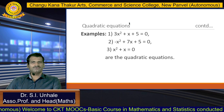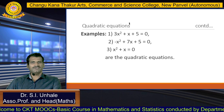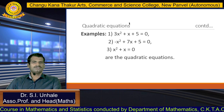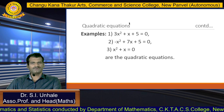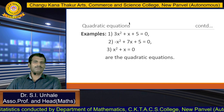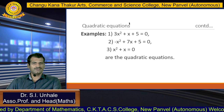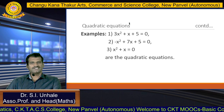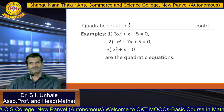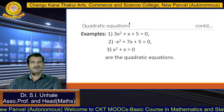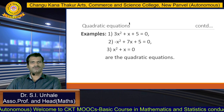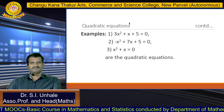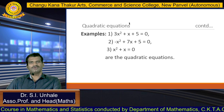Some examples of quadratic equations: 3x² + x + 5 = 0, where the highest power of x is 2 and the coefficient is 3, is a quadratic equation. Similarly, -x² + 7x + 5 and x² + x = 0 are also quadratic equations. In all these examples, the highest power of the variable is 2, and the coefficient of x² must not equal 0. In the first example, a = 3, b = 1, c = 5.